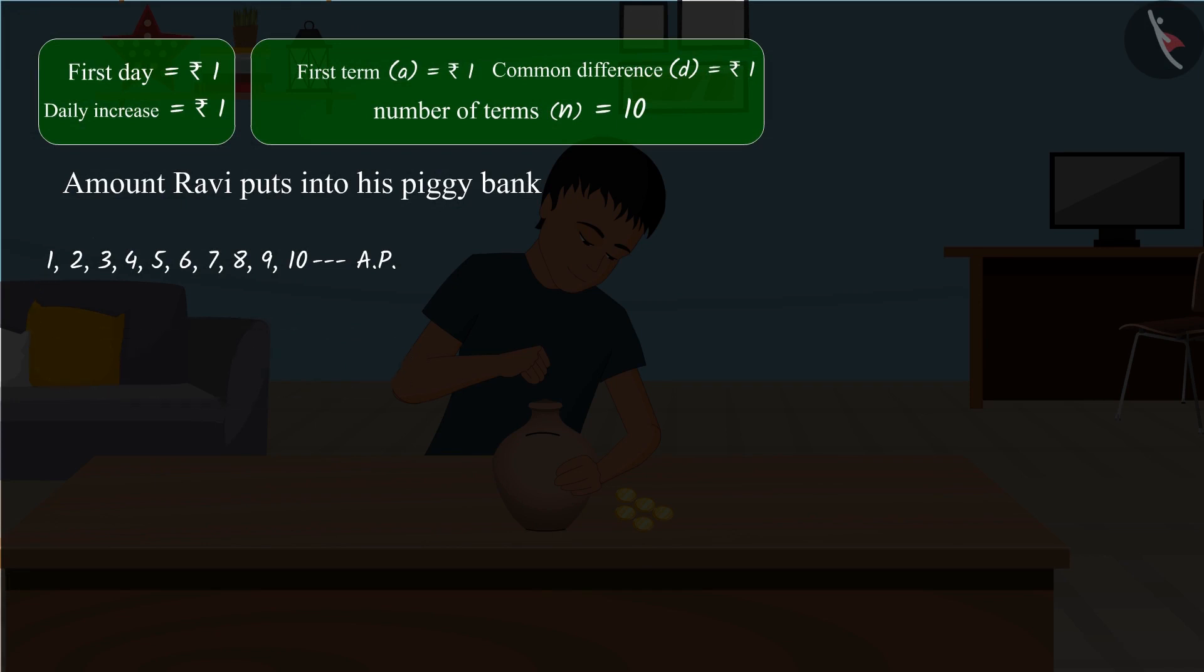We represent it by S and it displays the sum of the first n terms of an arithmetic progression. We can denote it by equation 1.